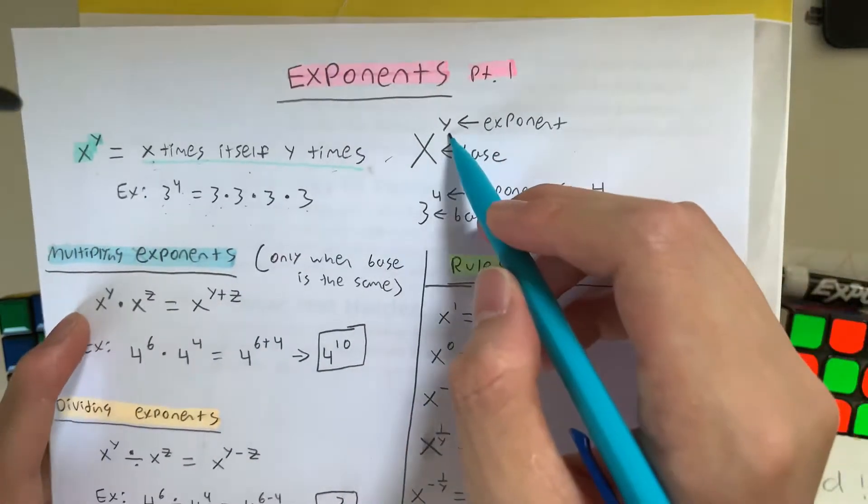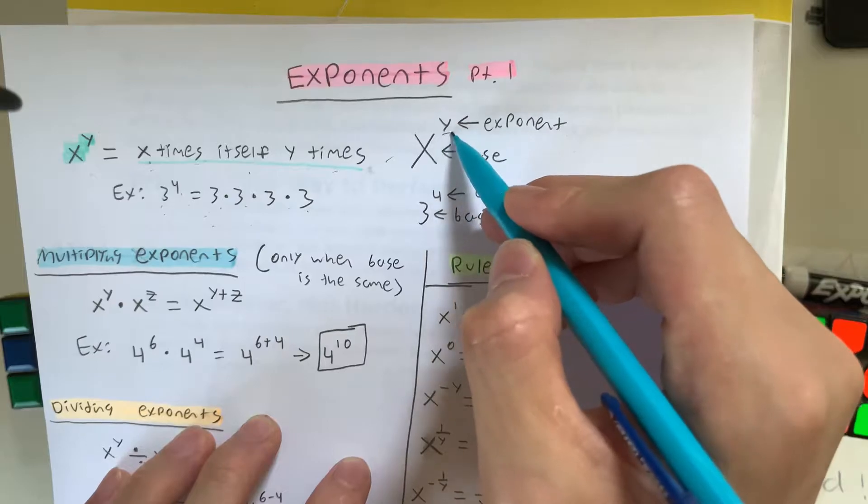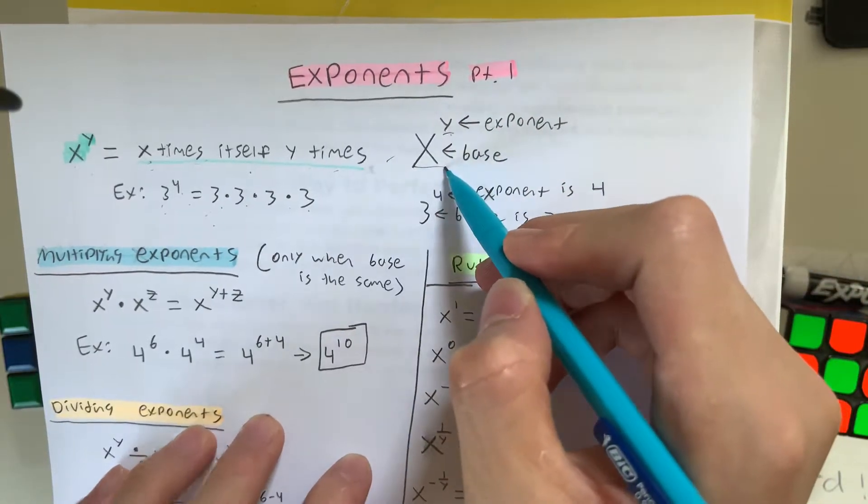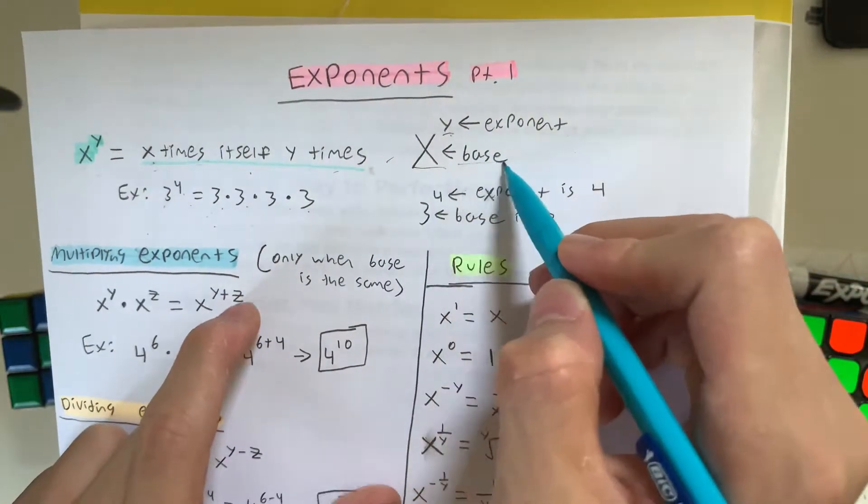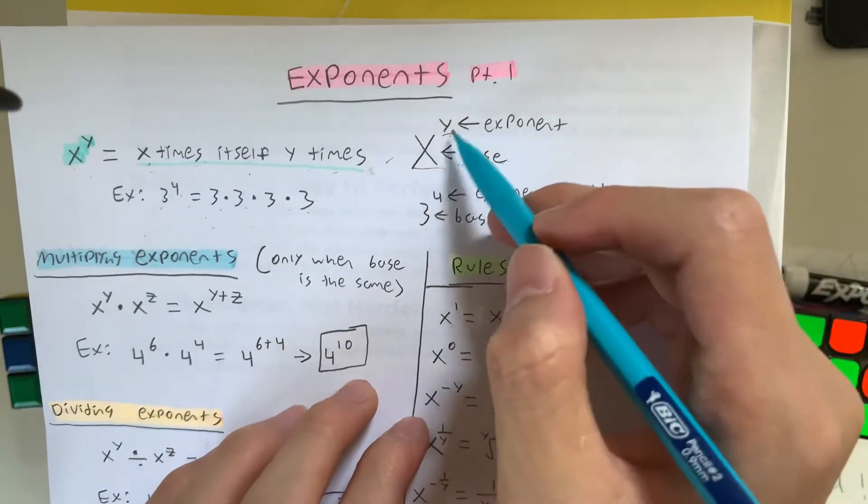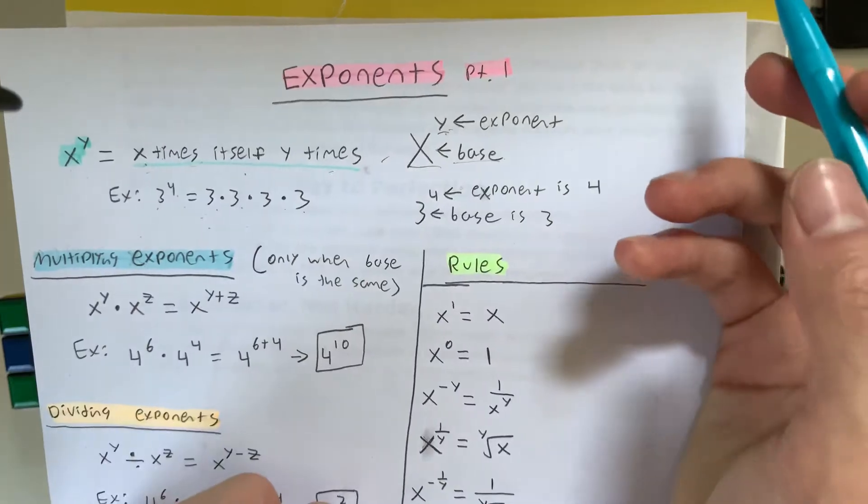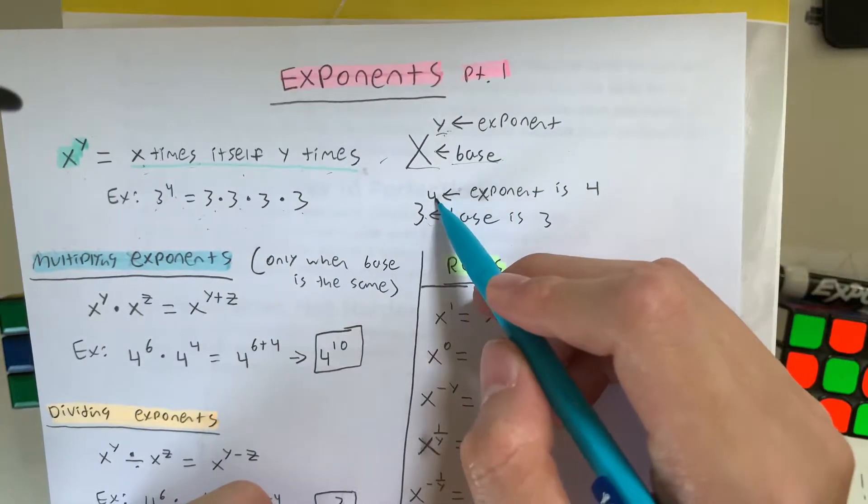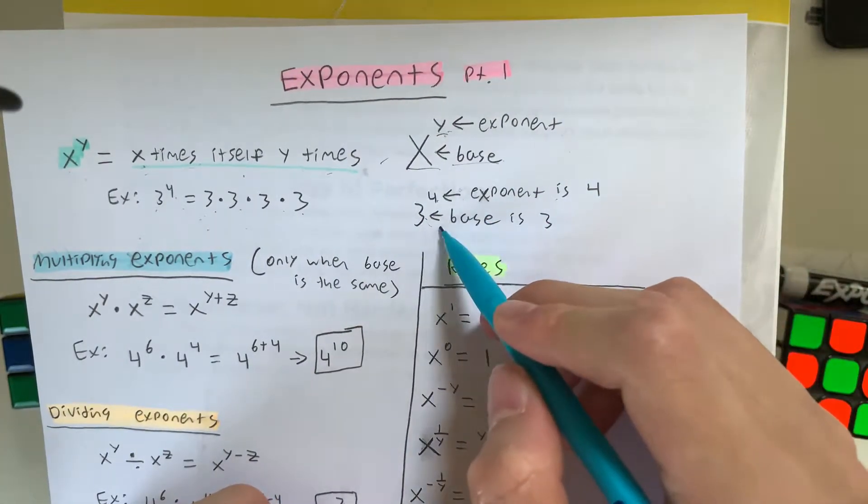So this is called the exponent, which is represented by y, and x, which is the number on the bottom, is called the base. You can remember this by the base as the bottom and exponent as the top. So in this case 3 to the 4th, 4 is the exponent and 3 is the base.